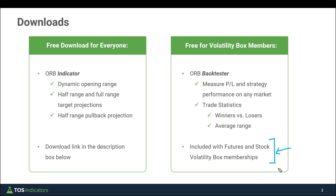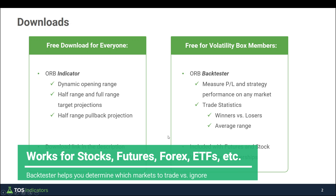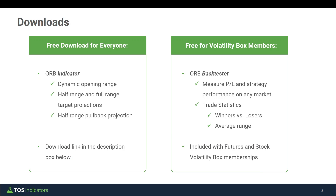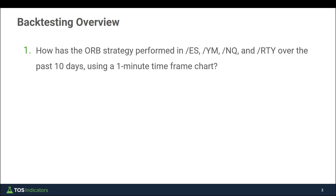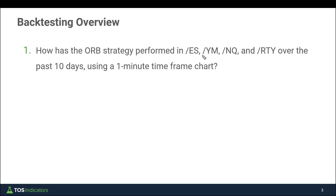The back tester is included for free for all Volatility Box members. You can use the link in the description box to download it and follow along on the major index markets — or of course use it on whatever market, stock, ETF, futures, or Forex you'd like. The strategy I'm looking to test is: how has this opening range breakout back tester performed on the past 10 days using a one-minute time frame chart, waiting for a close above or below as confirmation to trigger the breakout? I'm hoping we can find a clear set of winners and a clear set of losers across these major index markets.